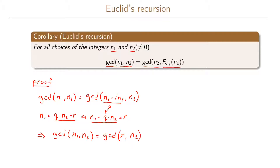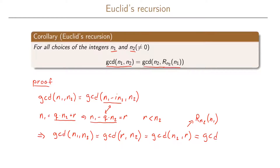Since r is less than n2, we typically write the largest integer first, so we rewrite this as the GCD of n2 and r. And r here is the remainder when n1 is divided by n2, so this equals the GCD of n2 and the remainder when n1 is divided by n2.